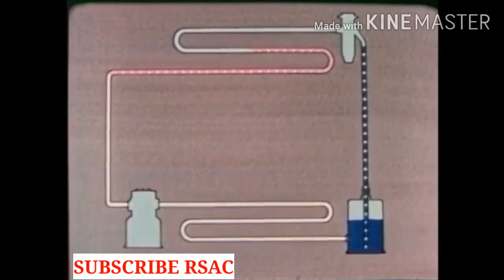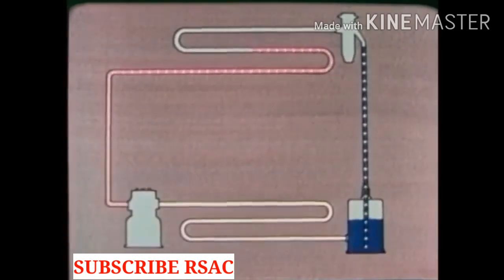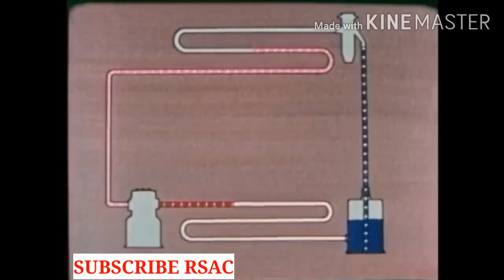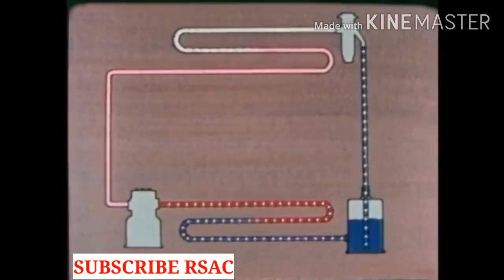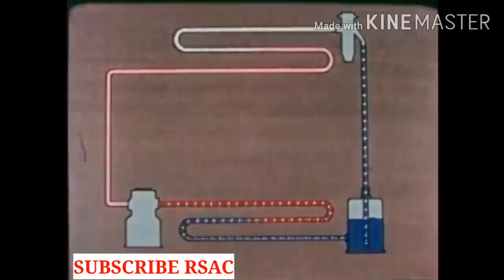Remember, any substance must take in heat in order to change from a liquid to a gas. The compressor sucks the vapor out of the evaporator and compresses it. This increases the pressure and temperature. The vapor is now hotter than the surrounding air. So in the condenser heat is given off to the air. As the refrigerant loses its heat it changes from a gas to a liquid and flows into the receiver.